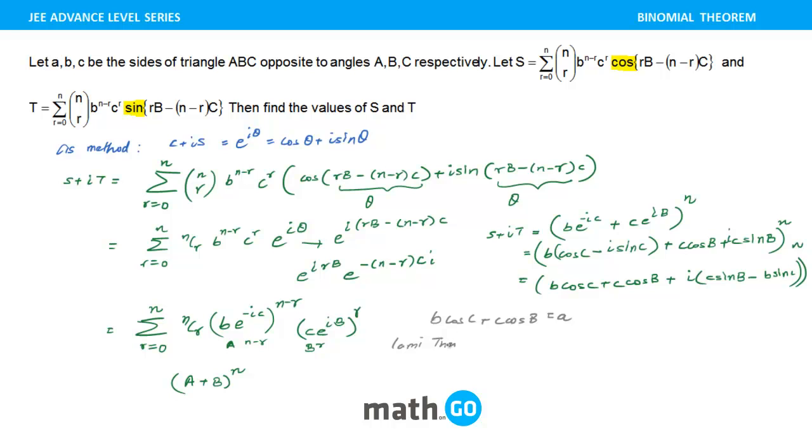And we also know that Lamy's theorem, right? From what is Lamy's theorem? Yes. So it says a by sin A is nothing but equal to b by sin B is equal to c by sin C. Okay, so which says that B sin C is equal to C sin B. So if you notice, this particular component becomes 0, and this particular component is A, and hence the question is getting solved like this.